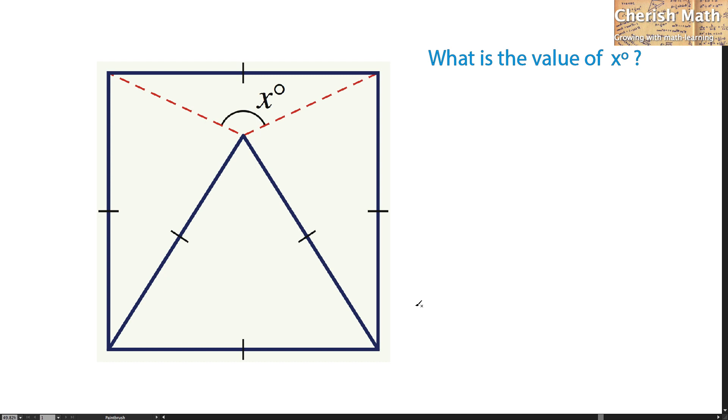The first step in solving the problem here is by finding what is the angle of this equilateral triangle. We know that each of the sides here is 60 degrees, by using 180 degrees divided by 3 angles.